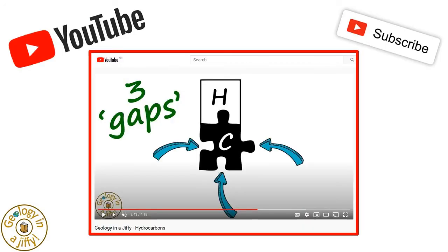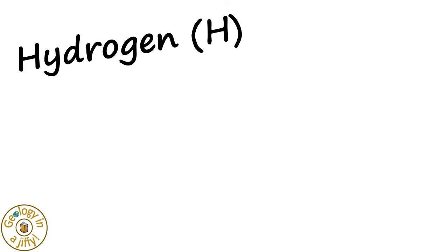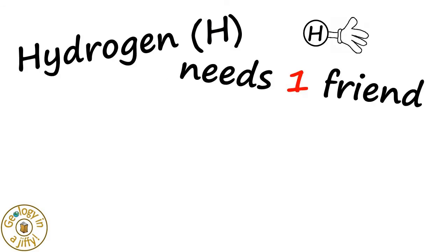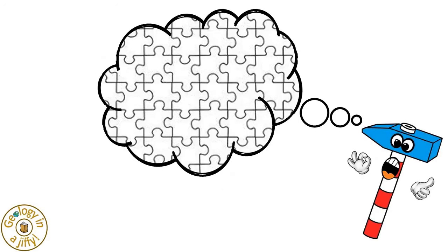From our hydrocarbons video we know there are two key ideas to use when constructing hydrocarbon compounds: hydrogen needs one bond, or friend, to be stable, and carbon needs four friends to bond with to be stable, and they all fit together like a jigsaw.